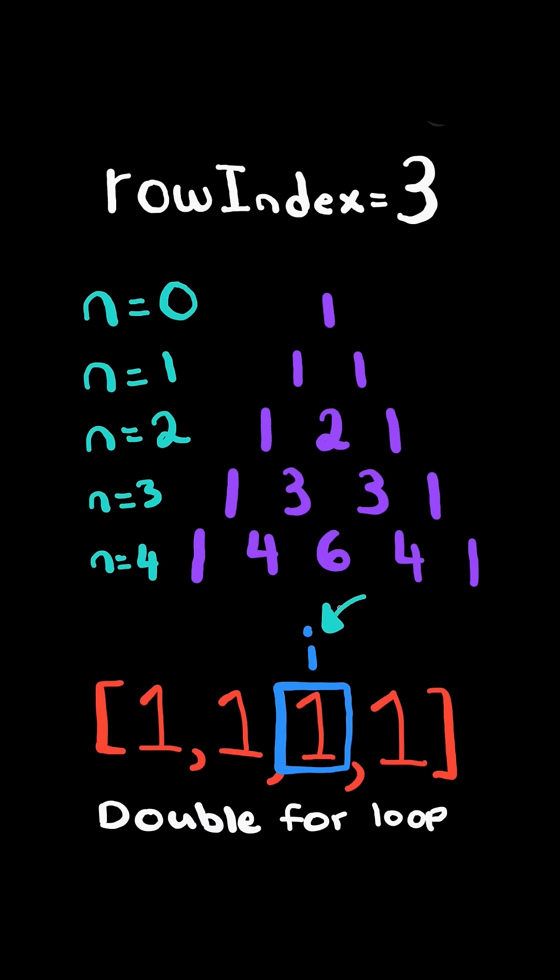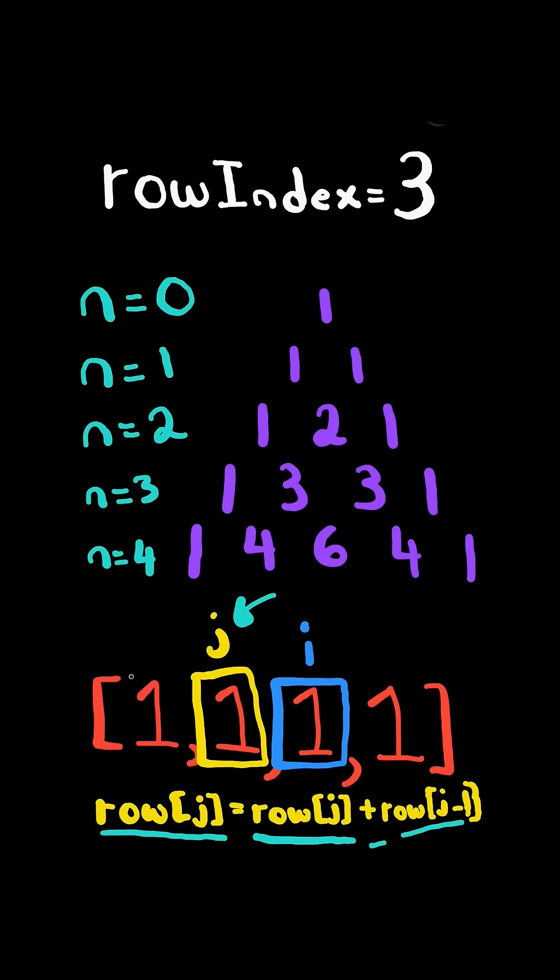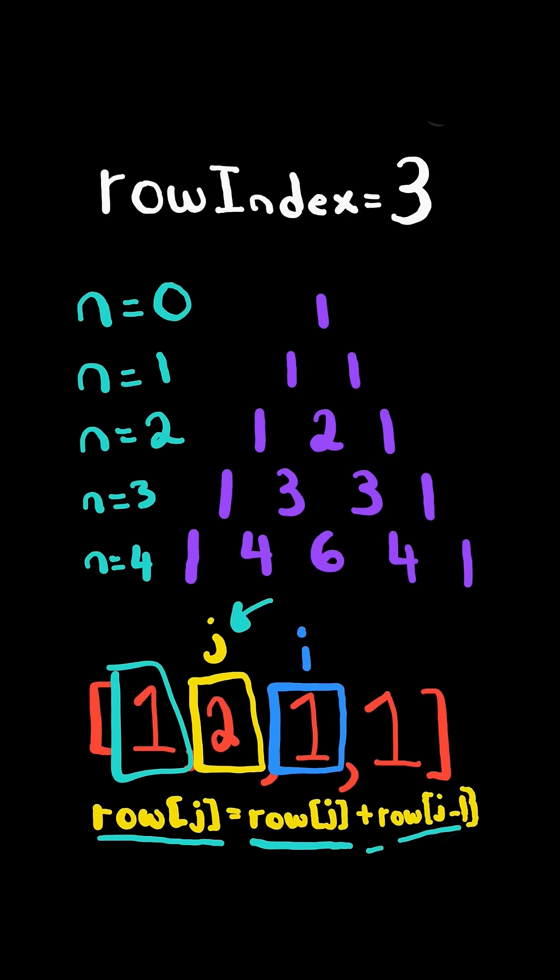We will have an ith pointer at the third element and a jth pointer iterating backwards behind i. We will update the value at j by taking itself and summing it with the previous value. This gives a value of 2.